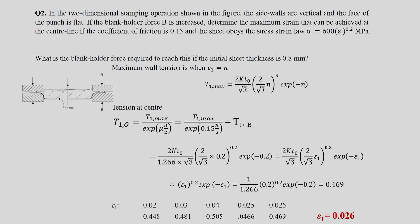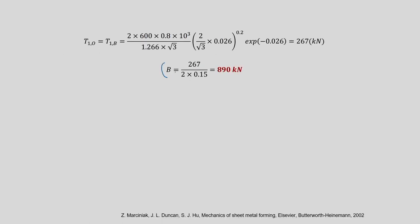So, let us continue our discussion with respect to this particular course. In the previous module, one last problem we solved — you have to note down a small change there. This particular problem Q2 we solved in the previous module: we calculated epsilon 1 and then we calculated a blank holding force B. This B is actually in kilonewtons — we missed it, it was kept as Newton. So you have to be a little bit careful in units; this is to be in kilonewton.